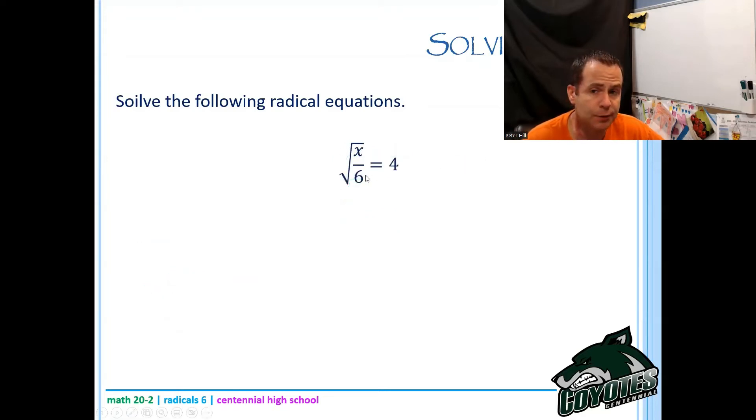Let's try this guy. The root of x over six equals four. Now the radical is already isolated. So all I have to do is square both sides. That's going to give me x over six equals 16. Don't forget to talk about restrictions. x has to be greater than or equal to zero. Then I just multiply both sides by six. And I have x equals 96.